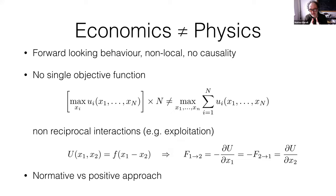In physics, equations are typically forward equations: you specify the state of a system at a given time and equations tell you how the system evolves from that state onward. In economics, you can have a situation where an economic agent wants to satisfy a goal at a certain time, and the equations you solve are backward in time — to understand what action is needed now to achieve a result later.